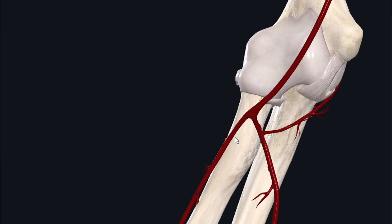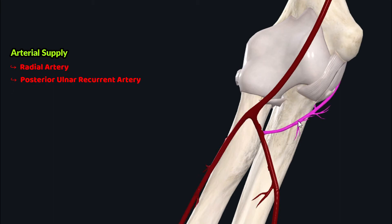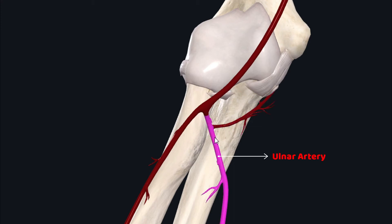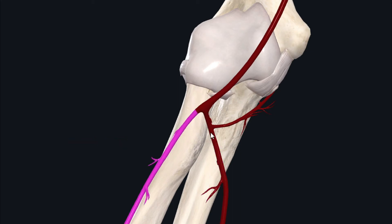The flexor carpi radialis muscle receives its arterial supply from two arteries: the radial artery and the posterior ulnar recurrent artery. The posterior ulnar recurrent artery arises as a posterior branch from the ulnar artery. The ulnar artery together with the radial artery arise as medial and lateral divisions of the brachial artery respectively.